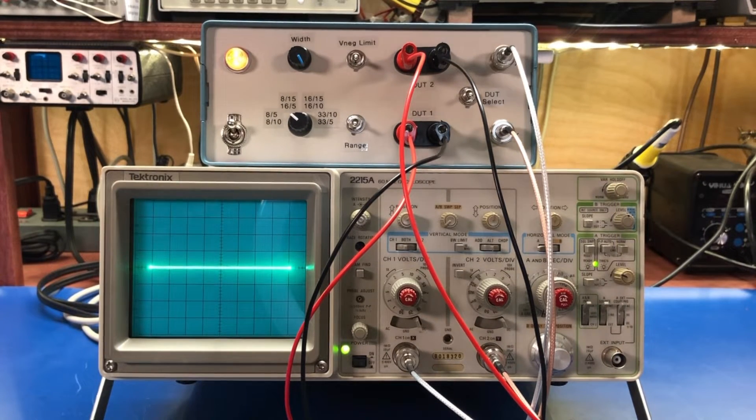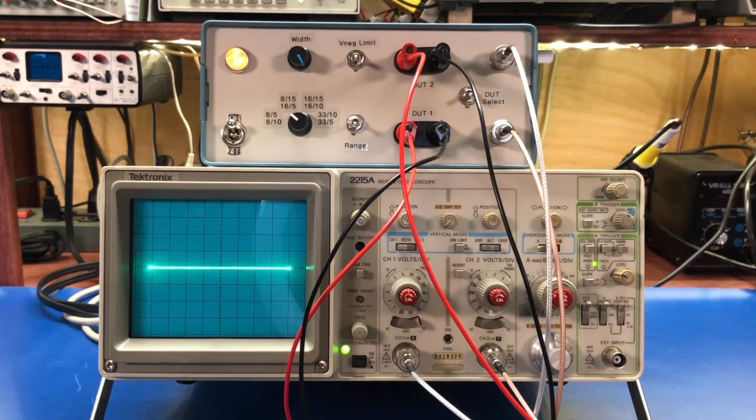All right so we've got the curve tracer hooked up to the oscilloscope. I'm using my Tektronix 2215A 60 megahertz scope. This curve tracer has, like my other one had, a width control.